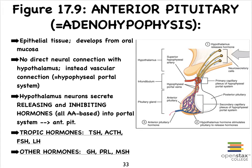This time we have a vasculature, particularly at the level of the infundibulum, where we see what we refer to as the primary capillary plexus of the hypophysial portal system. And then in the anterior pituitary, we see the so-called secondary capillary plexus of the hypophysial portal system.